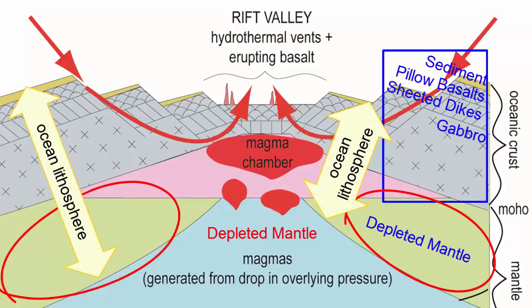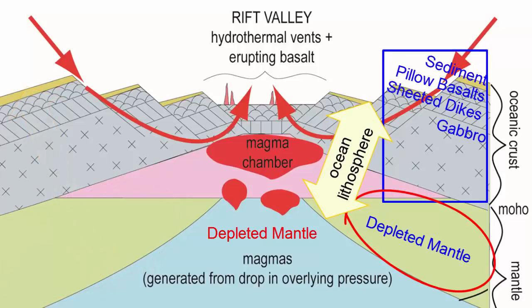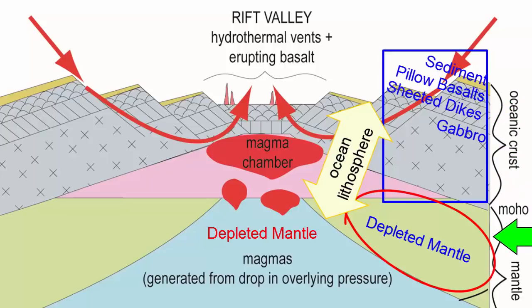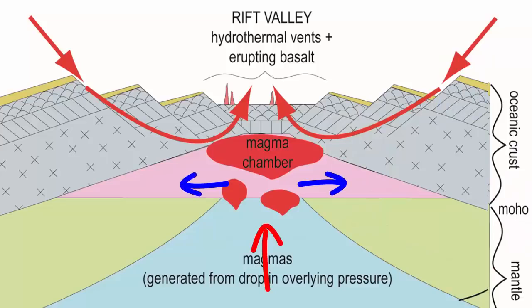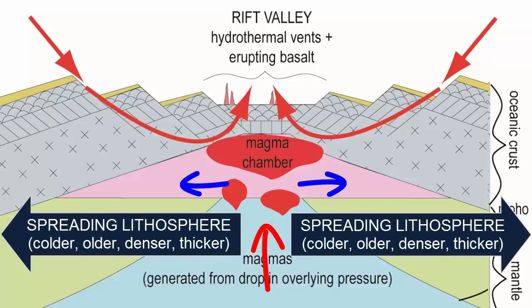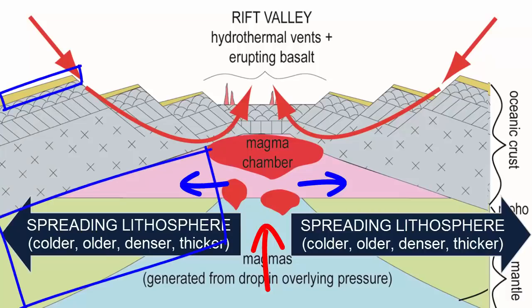Ocean lithosphere everywhere in the world is basically made of the same sequence of rock: sediment of varying thicknesses, above pillow basalt, above basalt dikes, above gabbro, above mantle rock. As this ocean lithosphere spreads, it grows gradually colder, older, and denser, collecting a thicker sequence of sediment on top and a thicker section of mantle plating underneath, resulting in thicker lithosphere overall.